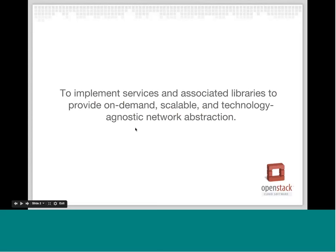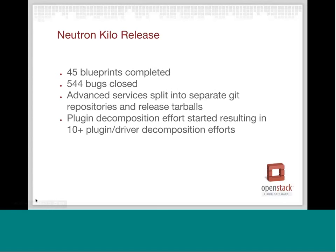Before we jump into what we're doing, I find it's always good to level set what exactly the networking project in OpenStack is doing. The mission statement as the OpenStack governance docs state is to implement services and associated libraries to provide on-demand, scalable, and technology-agnostic network abstraction. And I think one thing you're going to notice both in some of the work we've done in Kilo and definitely what we're doing in Liberty is we're definitely going down that path.